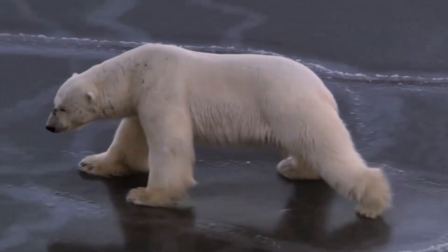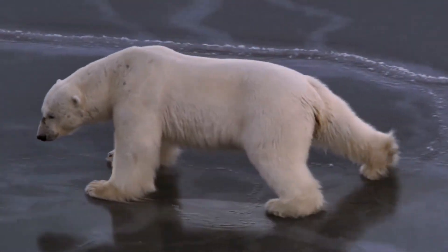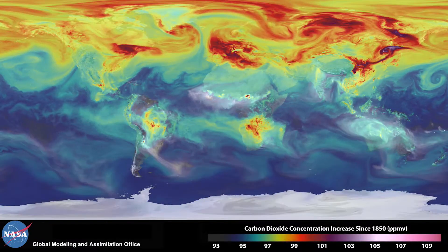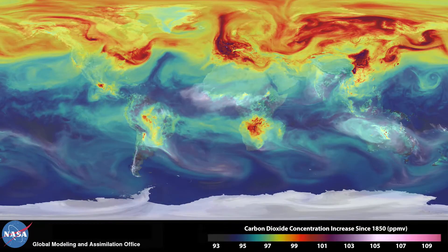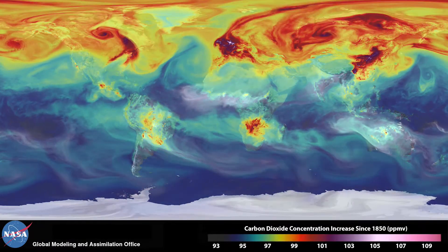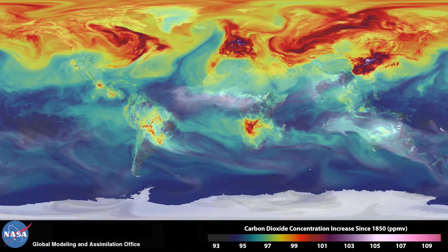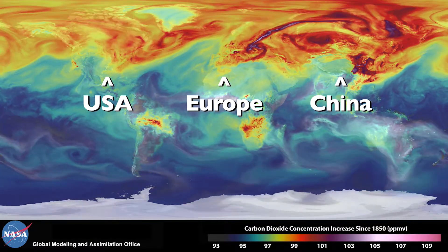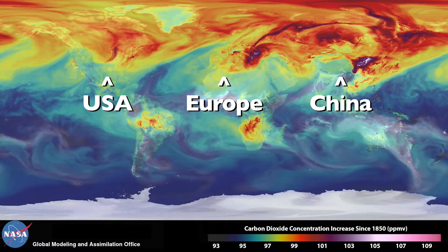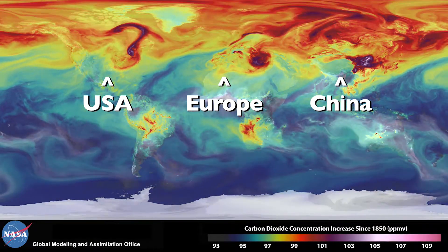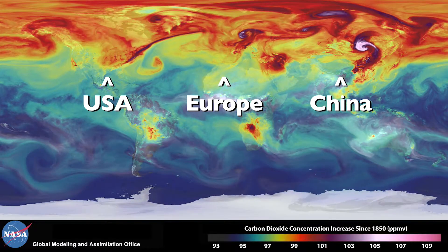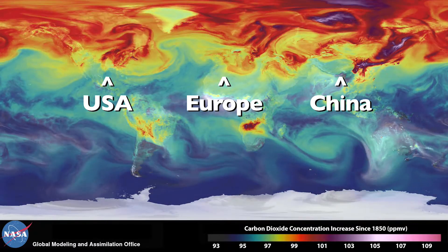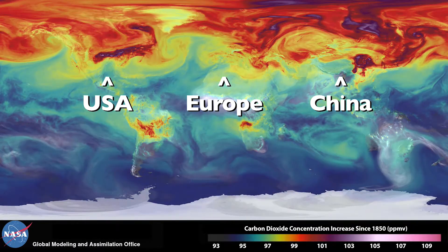As a consequence, global mean temperatures have increased. All greenhouse gases have long enough lifetimes that they mix globally. So carbon dioxide that is emitted in the United States or China gets mixed globally and increases downwelling longwave radiation all over the world.